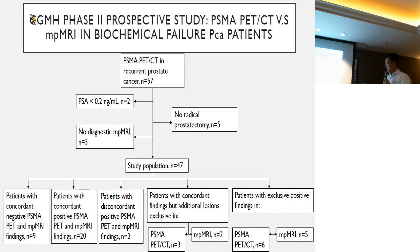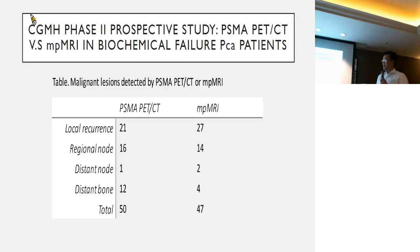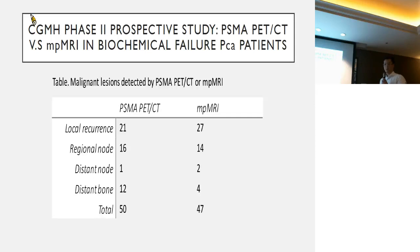And we have 11 cases with discordant findings by each imaging modality. Looking at the total lesions detected by these two different imaging modalities, the total lesion counts are quite different. When you look at the distribution of lesions detected, multi-parametric MRI had more local recurrence lesions, suggesting it detects more of those lesions.